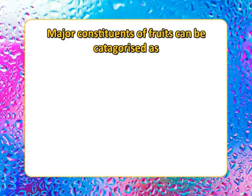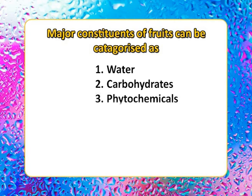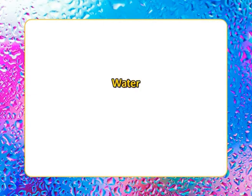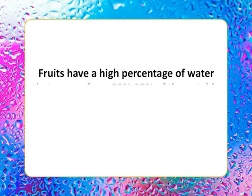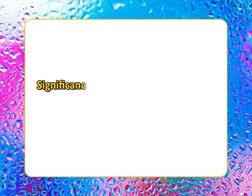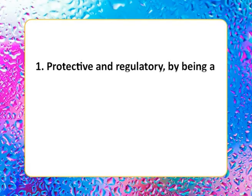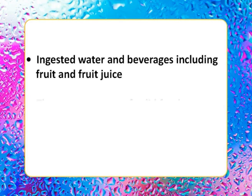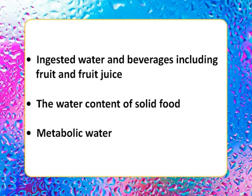Major constituents of fruits can be categorized as water, carbohydrates, phytochemicals, protein, fiber, minerals, and vitamins. Fruits have a high percentage of water, ranging from 80 to 95% of the edible part of the fruit, making them a very good source of water within solid foods. Water plays two fundamental roles as a nutrient — protective and regulatory — by being a substrate for biological reactions and an essential temperature and pH regulator in the human body. The human body has three sources of water: ingested water and beverages including fruit juice, the water content of solid food, and metabolic water.